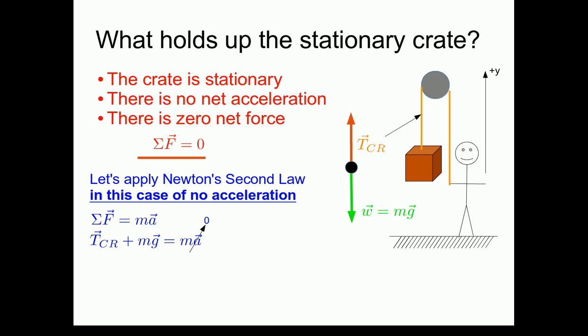Now both the tension and the weight force are vectors. Since we're adding them up, we need to break them into components. In order to break them into components, we need to establish a coordinate system. So I'm going to define the y direction to be positive going up. With this convention, the tension on the crate from the rope is positive and the weight is negative. Doing the algebra gives us that the tension on the crate from the rope is equal to the mass of the crate multiplied by little g, which on Earth, recall, is 9.8 meters per second squared.